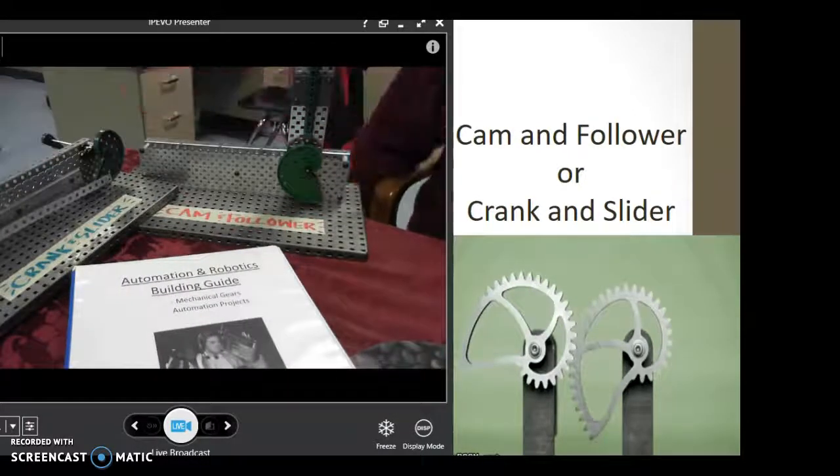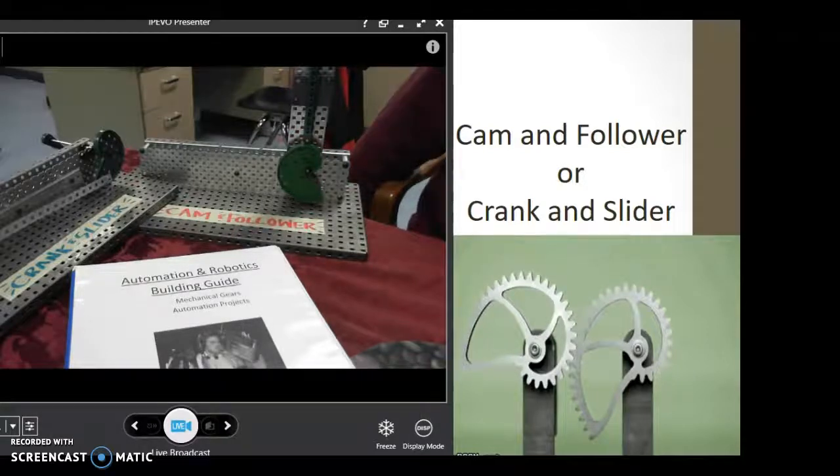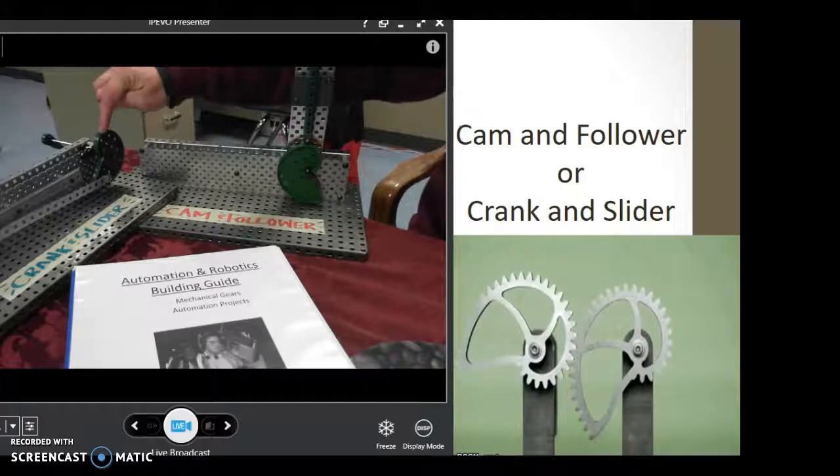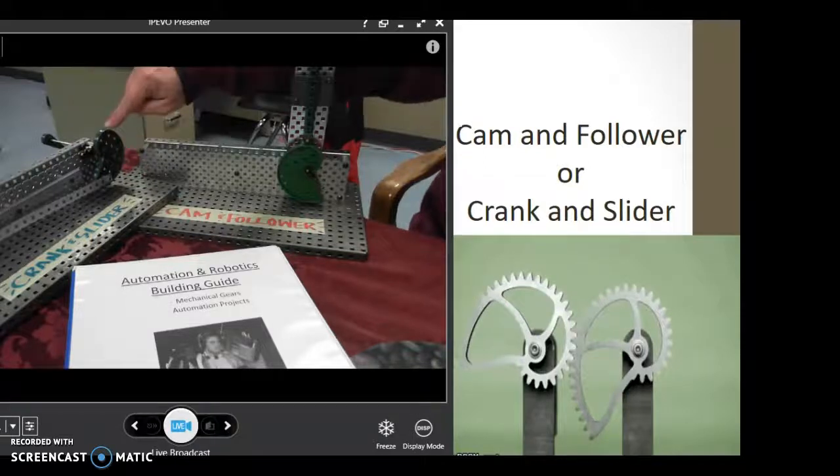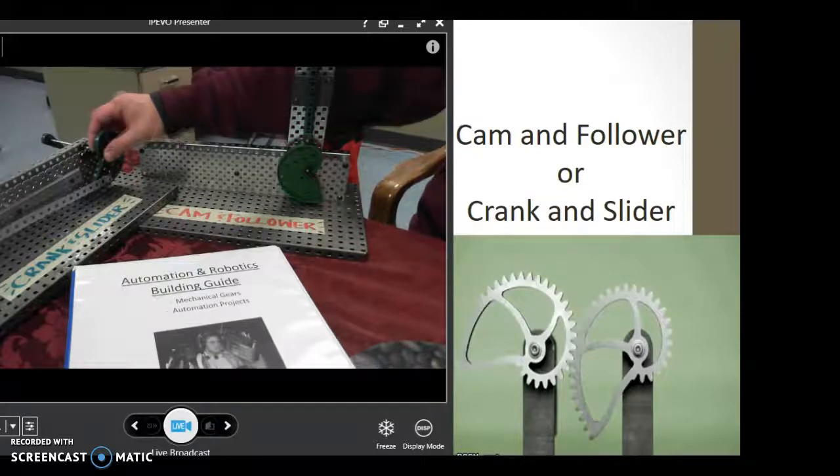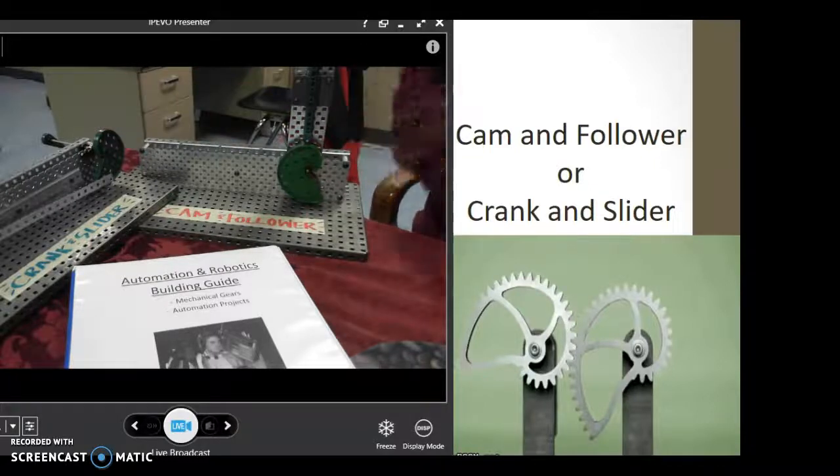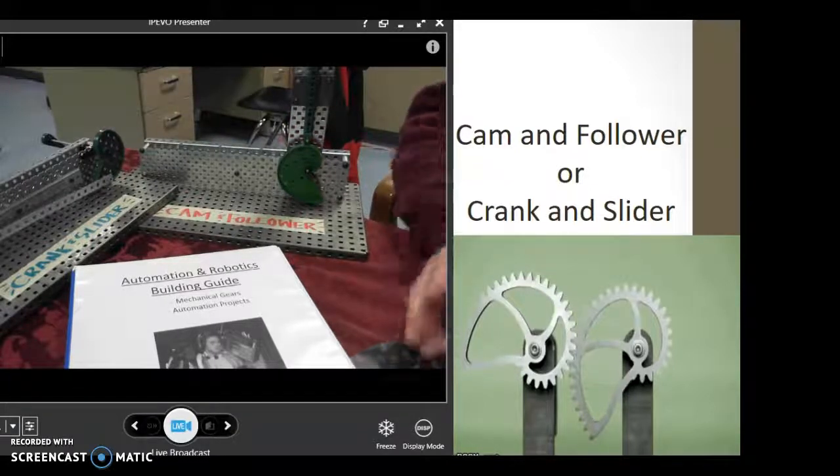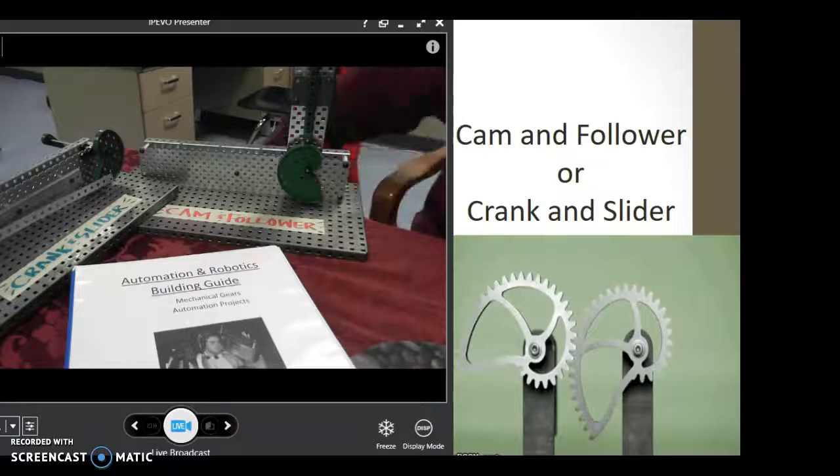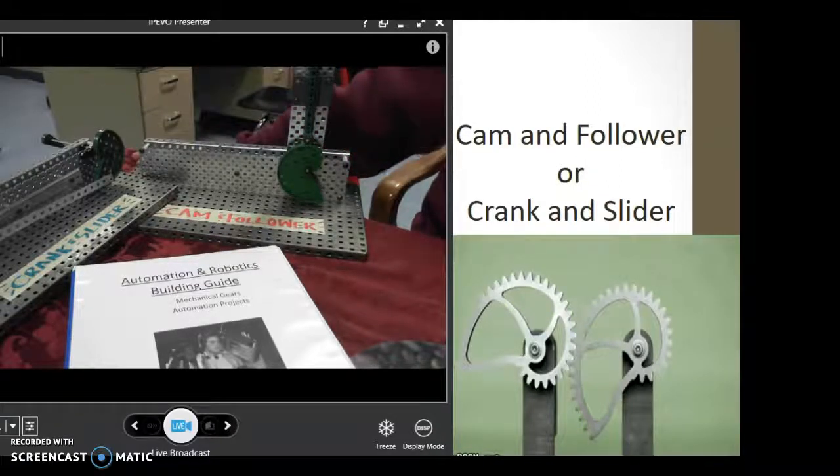We have the crank and slider and the cam and follower. They're fairly similar to each other - one is horizontal and one is vertical. What we notice in this mechanism is that we use a different type of gear. These aren't round gears, they don't even have teeth on them. I've heard them called nautilus gears or sometimes shell gears. You saw the one in the picture, this little animation on the screen that has some teeth on it, but the ones we're using don't.